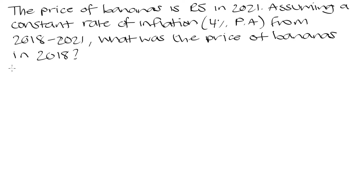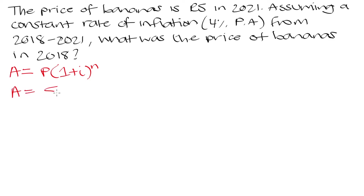Since we're dealing with inflation we apply the compound interest formula. In this case we are given our A — the price of bananas after those three years have elapsed — which is 5 rand. We are trying to determine P, the initial cost at the start of the period, which was 2018. So A = 5 rand, P is what we're trying to find, i = 4% per annum = 0.04, and n = 3 years, because 3 years have elapsed from 2018 to 2021.